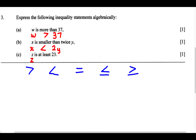It is important when you read these questions that you understand what they are saying. For part A, W is more than 37 — even though it didn't say "greater than," we know "more" means greater. For part B, X is smaller than twice Y — smaller means less than, and twice Y is 2Y, so X < 2Y. For part C, Z is at least 23 — because it is at least 23, Z can be equal to 23 or greater than 23, so we use greater than or equal to.